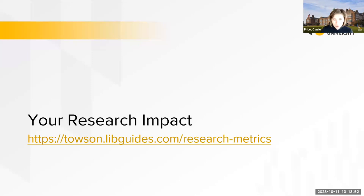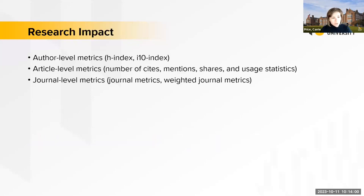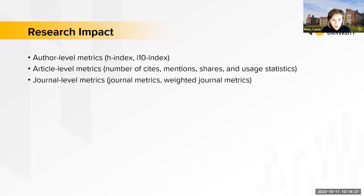The last thing before Miranda takes over is research impact. We have a guide at Towson. There are ways to look at author-level metrics — we talked about the H-index. Google Scholar also has an I-10 index. There are article-level metrics such as citations per article, mentions, shares, and usage statistics. And there are journal-level metrics — we've all heard of the impact factor and some others. Let's take a look at how to get to the research metrics guide from the Cook Library homepage, under Research Guides and then Topic Guides, alphabetically to Research Metrics.